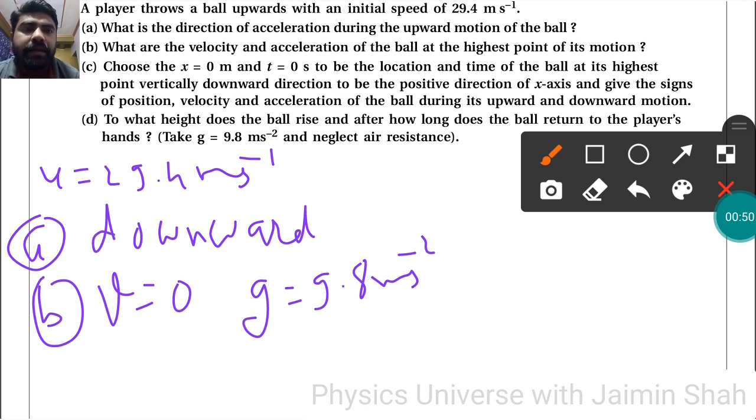Choose x = 0 m and t = 0 s to be the location and time of the ball at its highest point. Vertically downward direction to be the positive direction of x-axis, and give the sign of position.